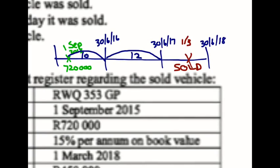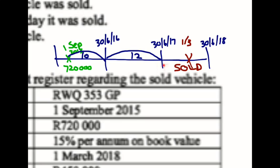When we bought it, we still used it for 10 months in that first year, and then it was the end of the year for depreciation. Depreciation is usually done at the end of the year as part of adjustments. The following year we used it for a full 12 months and then depreciated it. The last depreciation would have occurred on the 30th of June 2017. Then we sold it on the 1st of March, which is in the middle of the year — not yet the end. So I would not actually have depreciated it until the end of the year, but now I'm selling it, so I need to determine the carrying value on this date.